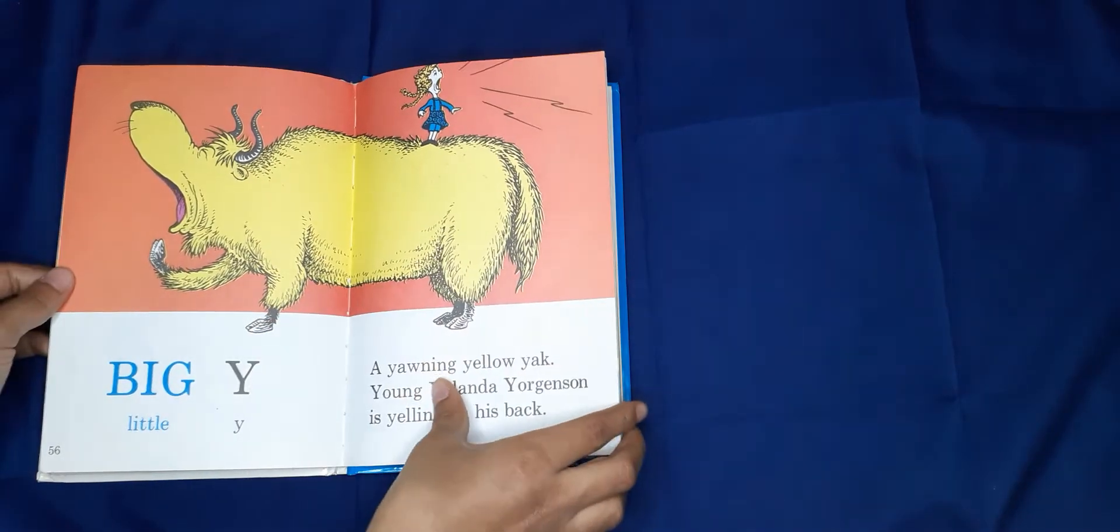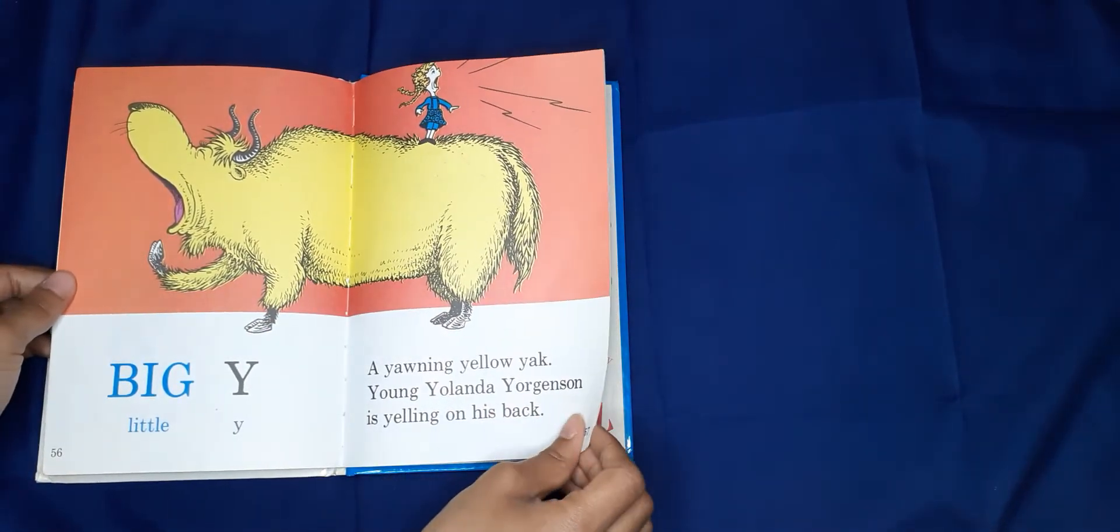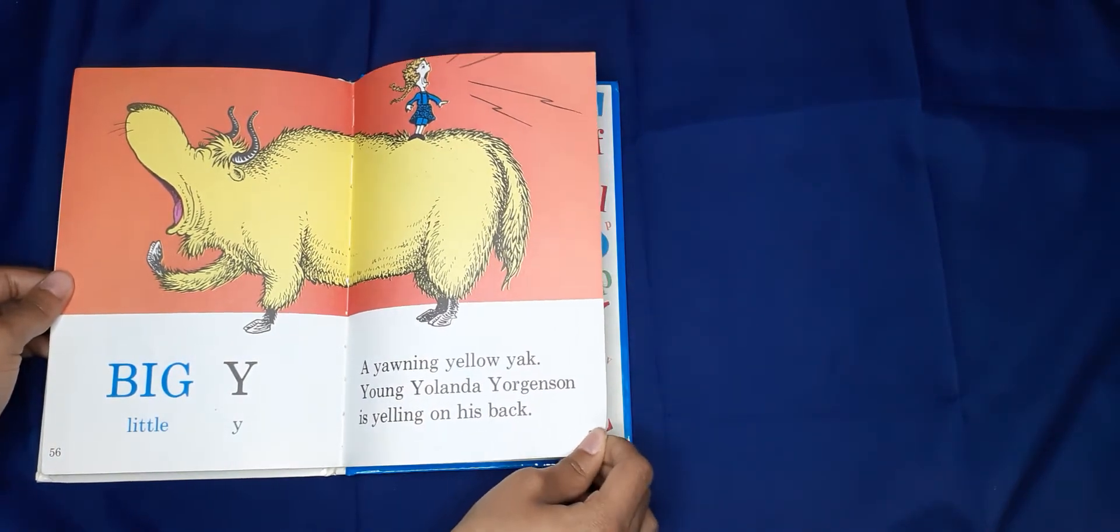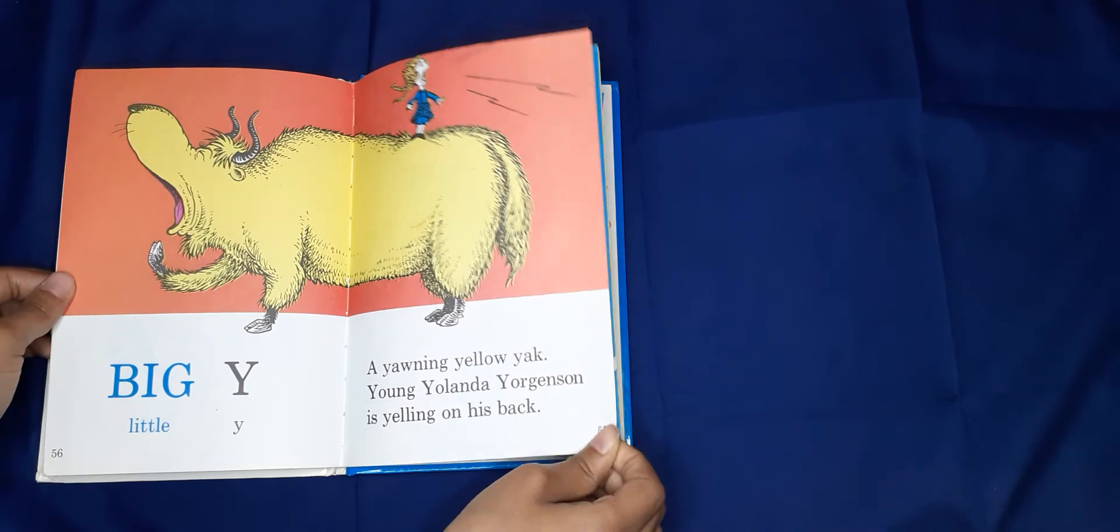Big Y, Little Y. A yawning yellow yak. Young Yolanda Jorgensen is yelling on his back.